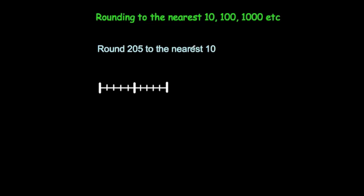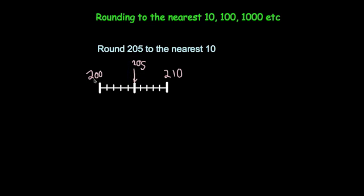This time we're going to round 205 to the nearest 10. So here we've got 200 and here we've got 210, and 205 is actually in the middle. As you can see, it's neither closer to 200 nor 210. But the common rule is: if the number is exactly in the middle, you round up. So if a number ends in a 5 and you're rounding to the nearest 10, you round up. So the answer would be 210.